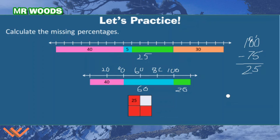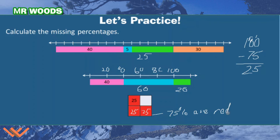Let's look at the model below. What's the percentage of squares that are colored red? Well, if one square is worth 25, we can count by 25: 25, 50, 75. So the red portion is 75%, because I put 25 here and 25 here. That's 75% are red. And how much is white? If one square equals 25, that's just 25% right there. And 25% plus 75% is equal to 100%.